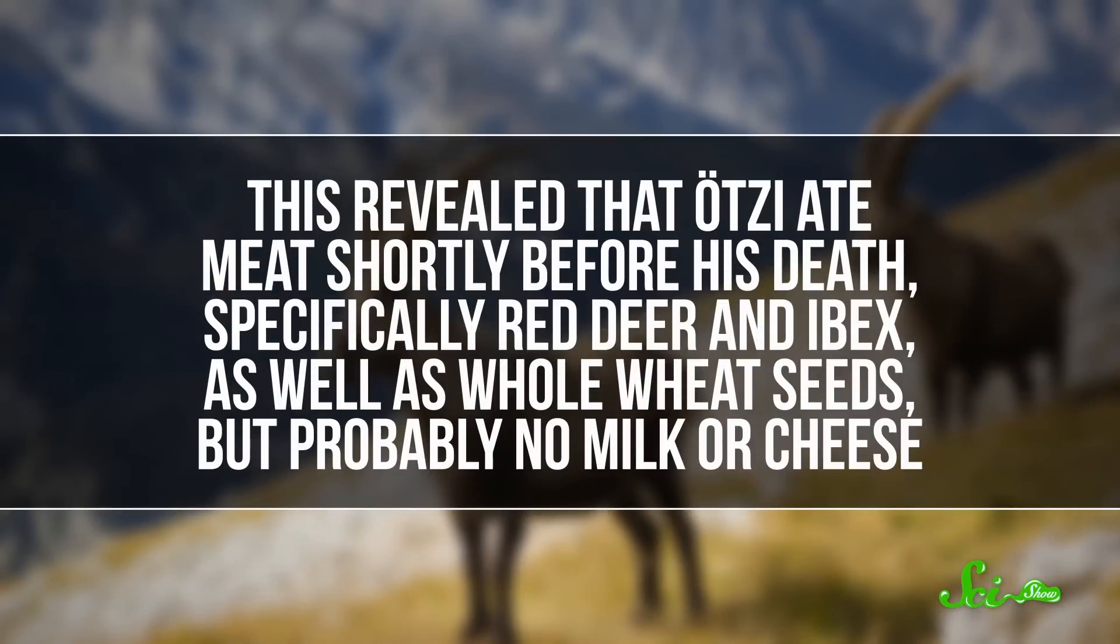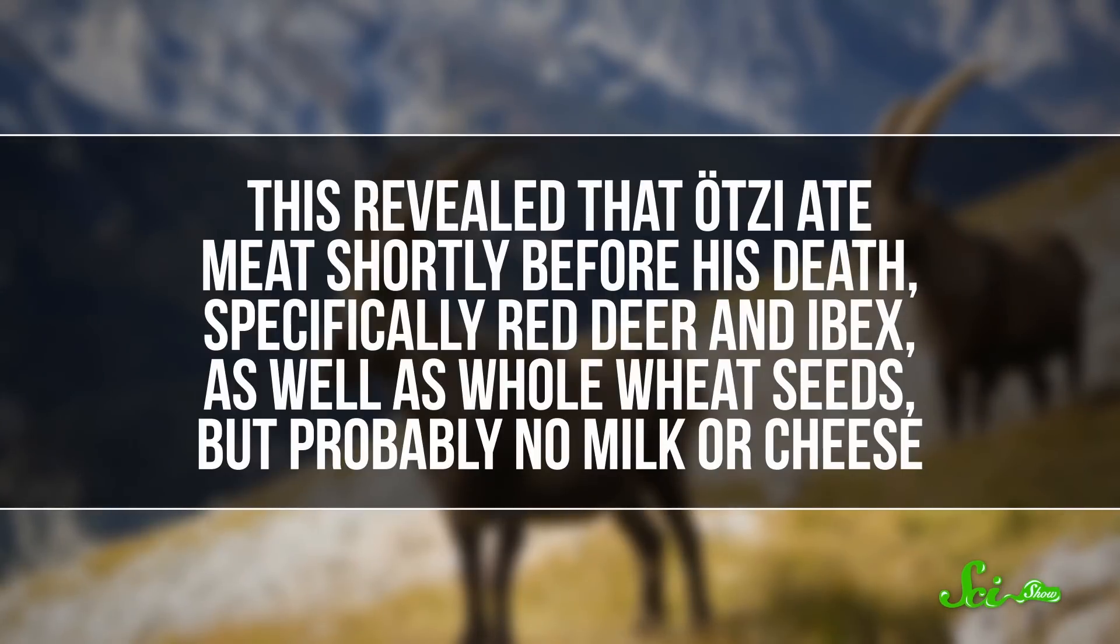In many cases, this meant running the mummy's samples through mass spectrometers, machines that can sort out molecules based on their mass and charge to identify them. But they used some other techniques too. This revealed that Ötzi ate meat shortly before his death, specifically red deer and ibex, as well as whole wheat seeds, but probably no milk or cheese.